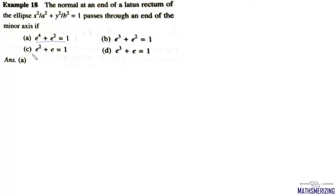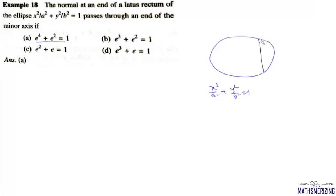The question is: the normal at an end of the latus rectum of an ellipse passes through an end of the minor axis if e⁴ + e² = 1. We consider the ellipse x²/a² + y²/b² = 1. At the end of the latus rectum, let the point be (ae, b²/a). If we draw the normal and it passes through one end of the minor axis which is (0, -b), we need to find the condition on eccentricity.